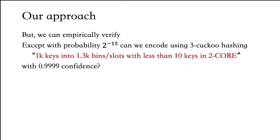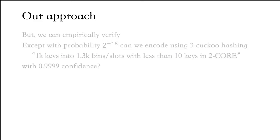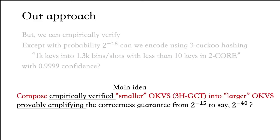So this is our approach: we can verify statements like — except with probability 2⁻¹⁵, can we encode using cuckoo hashing 1,000 keys into 1.3k bins with less than 10 keys in the two-core with high statistical confidence of 0.9999? The answer is yes — we can easily run such experiments even on our personal laptops. Our main idea is to compose empirically verified smaller OKVSs into a larger OKVS by provably amplifying the correctness guarantee from 2⁻¹⁵ to something like 2⁻⁴⁰.